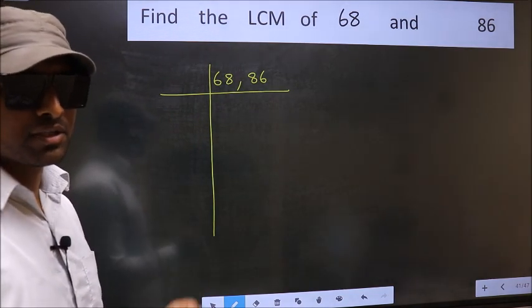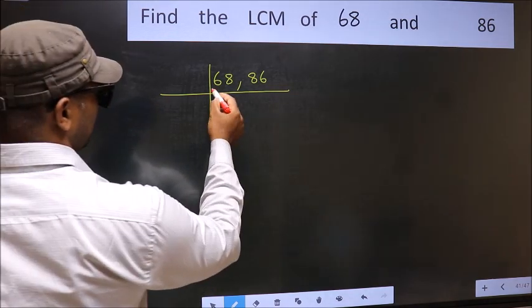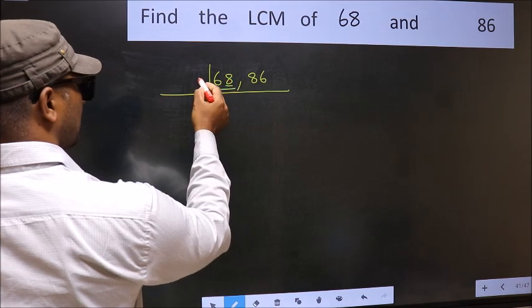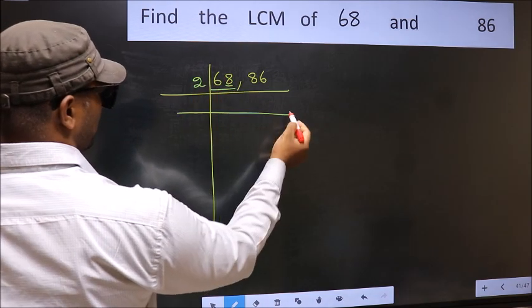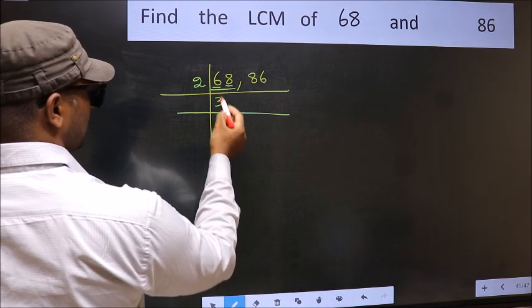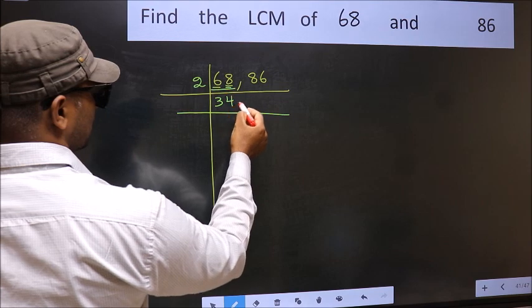Now focus on the first number, which is 68. The last digit 8 is even, so take 2. First number 6, when do we get 6 in the table of 2? 3 times 2 is 6. The other number 8, when do we get 8 in the table of 2? 4 times 2 is 8.